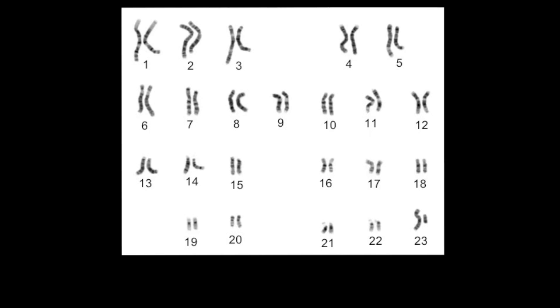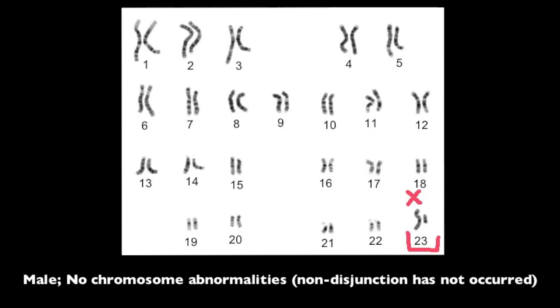In this first karyotype we can see that all of the chromosomes exist in pairs, therefore non-disjunction has not occurred. Pair number 23, the sex chromosomes, show an X and a Y. The Y being the shorter chromosome, therefore this karyotype belongs to a male.